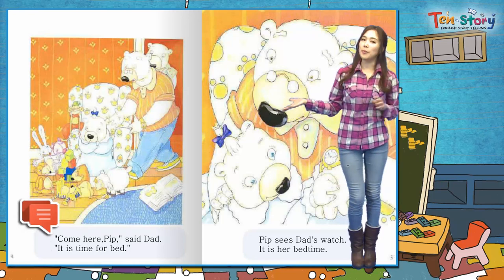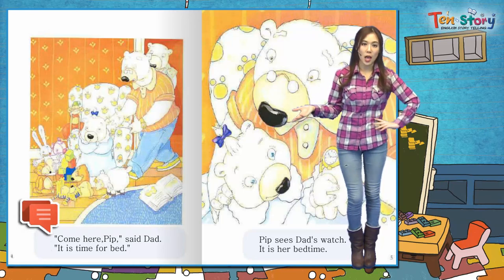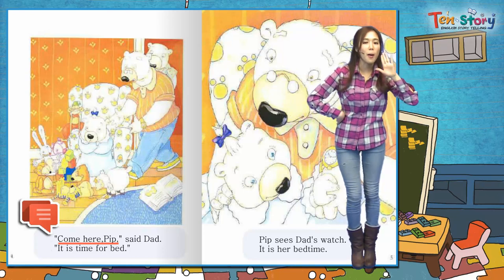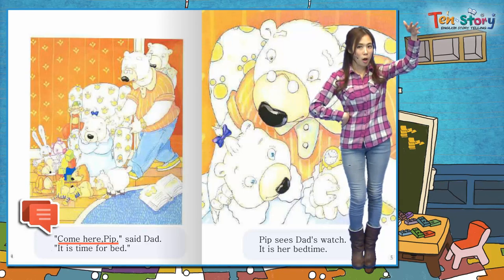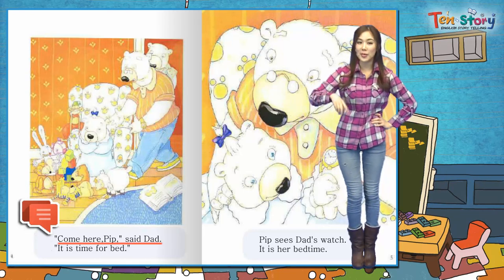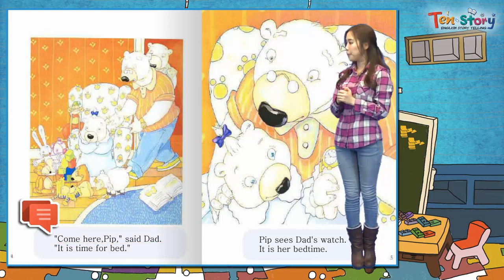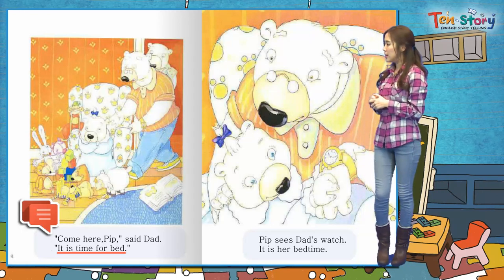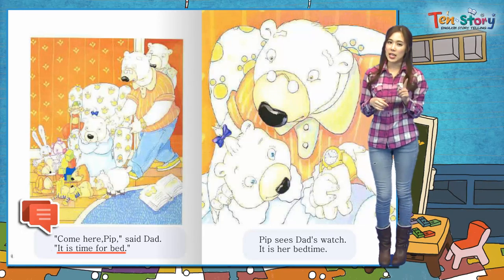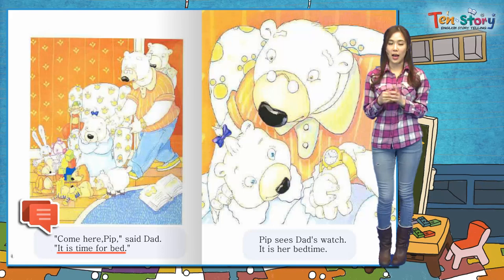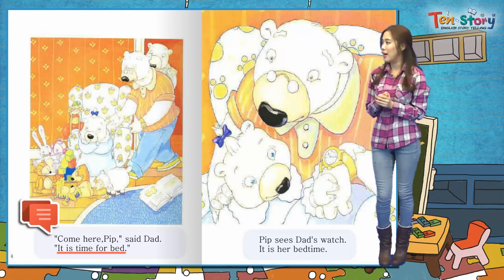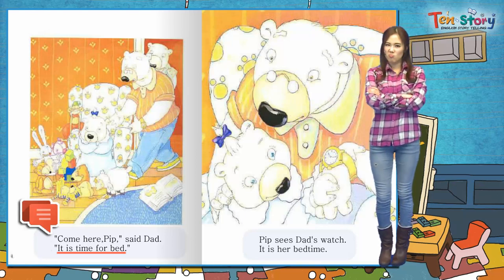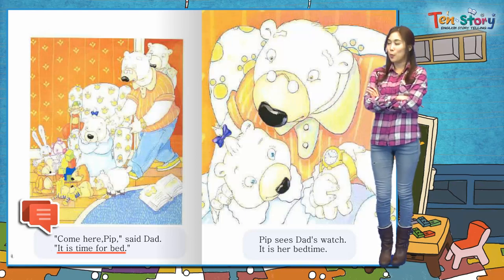그래서 Come here, PIP, said dad. PIP, 이리 와봐. 아빠께서 말씀하셨어요. 이번에는 아빠가 말씀하셨죠? It is time for bed. 이젠 잘 시간이야, 자러 갈 시간이야. 아빠가 이번에도 얘기하죠? 근데 PIP을 보면 자기 싫은데, 이런 표정이죠.